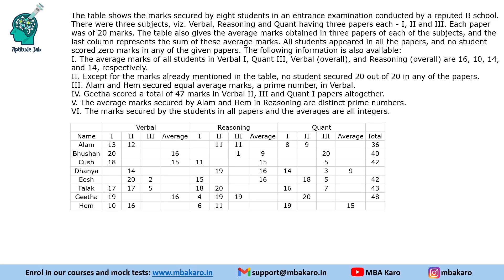Hello everyone, welcome to Aptitude Jab. In this set we are given a table that shows the marks secured by 8 students in an entrance examination conducted by a reputed B-school. There were 3 subjects - Verbal, Reasoning, and Quant - and they had 3 papers each. All 3 subjects had 3 papers, and each paper was of 20 marks.